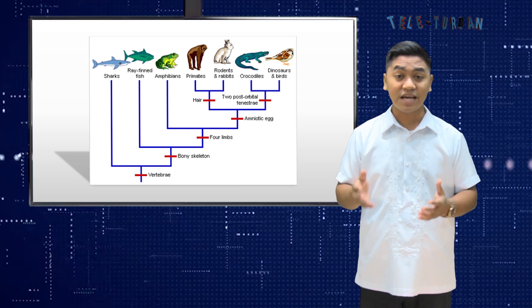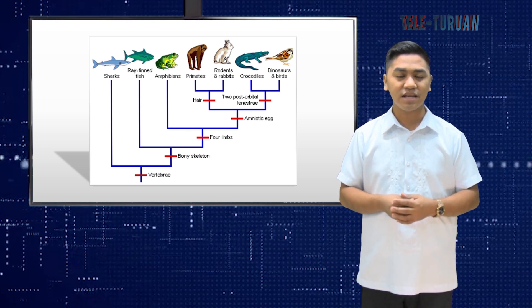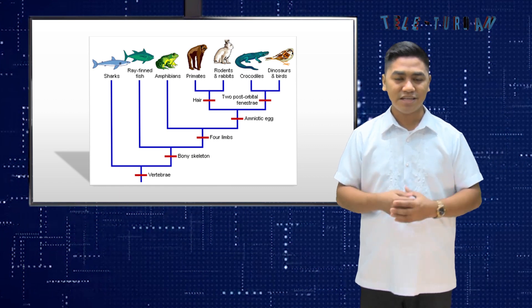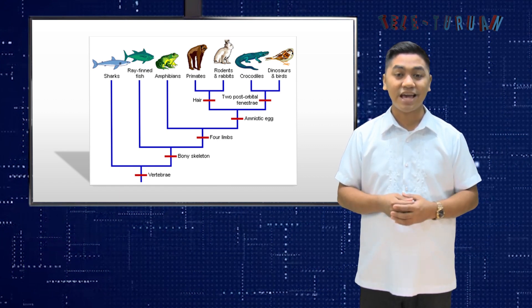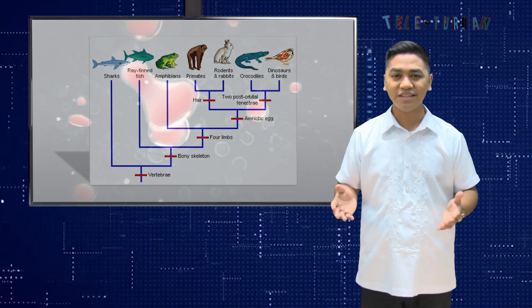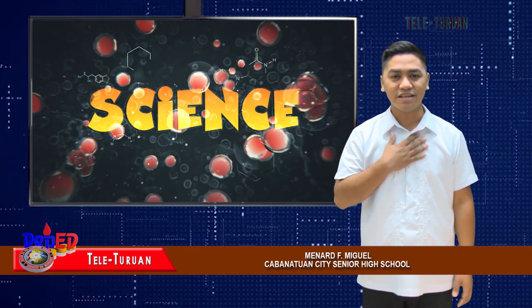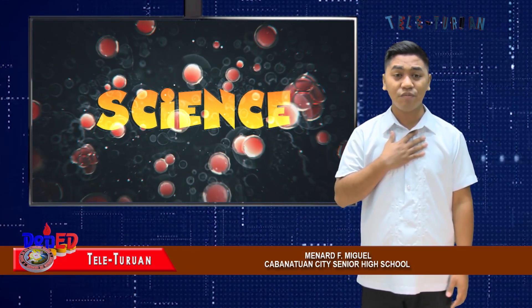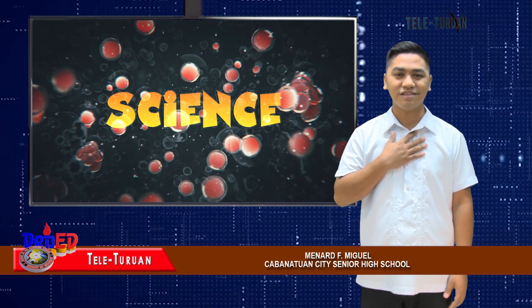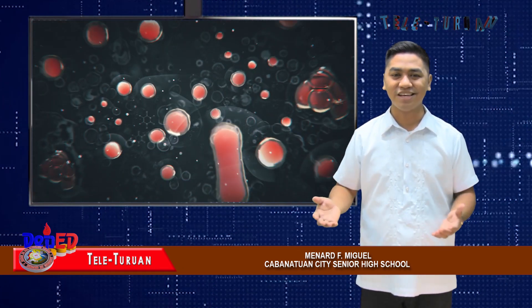It is necessary to classify organisms because it helps in the identification of living organisms, as well as in understanding the diversity of living organisms. Classification helps us to learn about different kinds of plants and animals, their features, similarities, and differences. Thank you so much. Again, this is Menard F. Miguel from Cabanatuan City Senior High School. Goodbye, God bless, and good day.